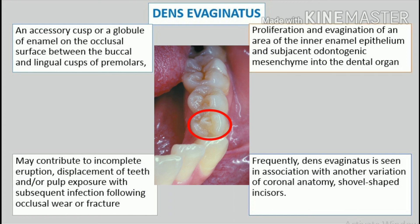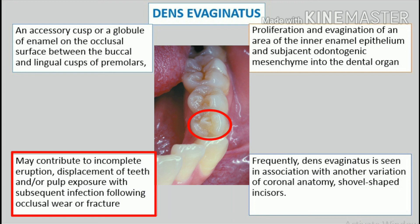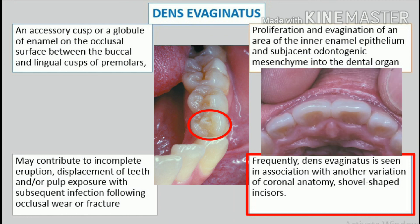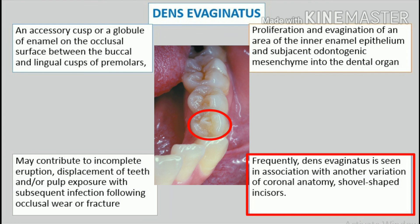The clinical significance of the condition is similar to that of the talon cusp, which it may physically resemble. This extra cusp may contribute to incomplete eruption, displacement of teeth, and/or pulp exposure with subsequent infection following occlusal wear or fracture. Frequently, dens evaginatus is seen in association with another variation of coronal anatomy, shovel-shaped incisors. Dens evaginatus typically results in occlusal problems and often leads to pulpal death. In affected teeth, removal of the cusp often is indicated, but attempts to maintain vitality have met with only partial success.